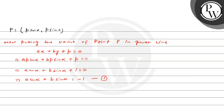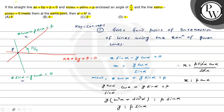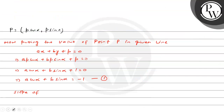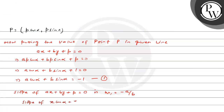From this, a·cosα plus b·sinα equals −1. Call this Equation 1. Now, we use the slope condition. The slope of ax plus by plus p equals 0 is m1 = −a/b, and the slope of x·cosα plus y·sinα equals p is m2 = −cosα/sinα.